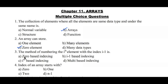Question number three: the method of numbering the ith element with the index i minus one. Options: a) zero-based indexing, b) i-minus-one-based indexing, c) ith-based indexing, d) multi-based indexing. Here option a, zero-based indexing, is the right answer.